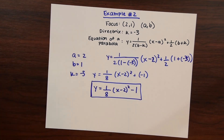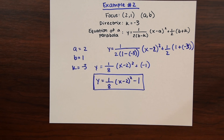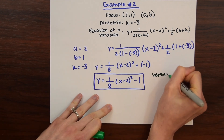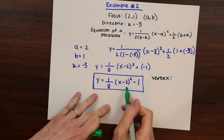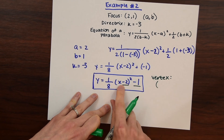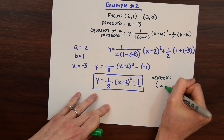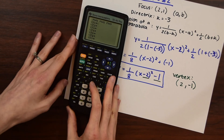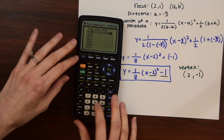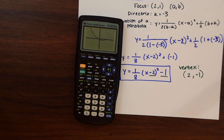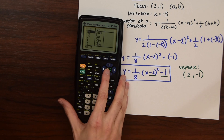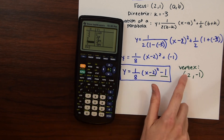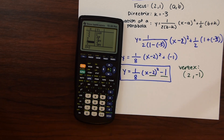There are multiple ways to check our answer. You can find the vertex from the equation by negating the value inside the squared term and keeping the constant — giving vertex (2, negative 1), which matches what we were given. Plugging into the calculator, we get an upward-facing parabola, and checking the table we find the vertex at (2, negative 1), confirming our answer is correct.